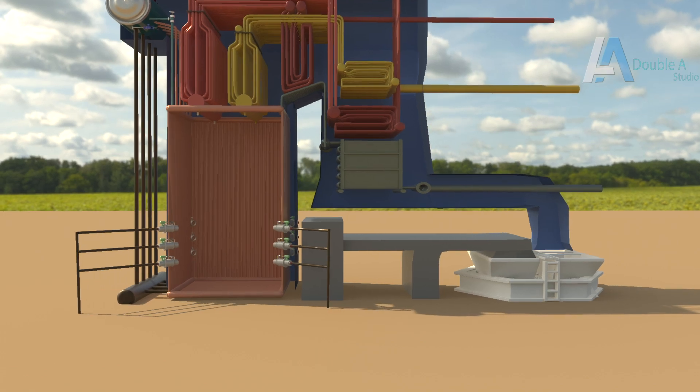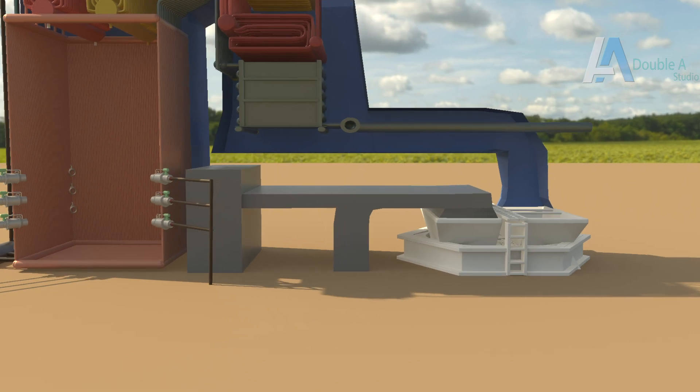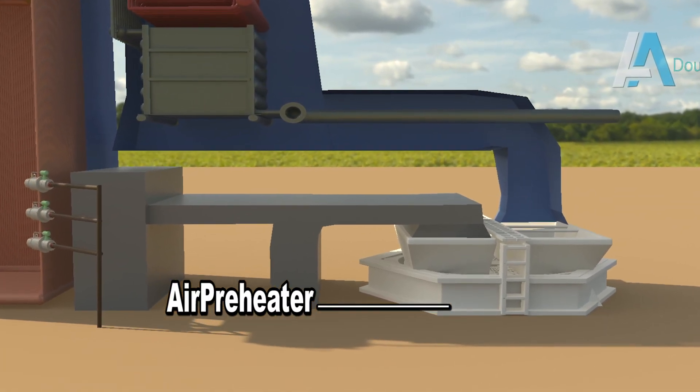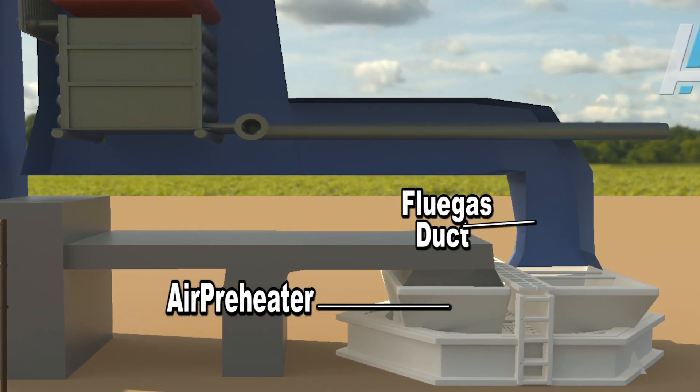Next accessory is air preheater. It is also a very important boiler accessory, which is located after economizer and at the exit of flue gas duct. It recovers useful heat from exhaust flue gas, which otherwise might get lost through the stack.